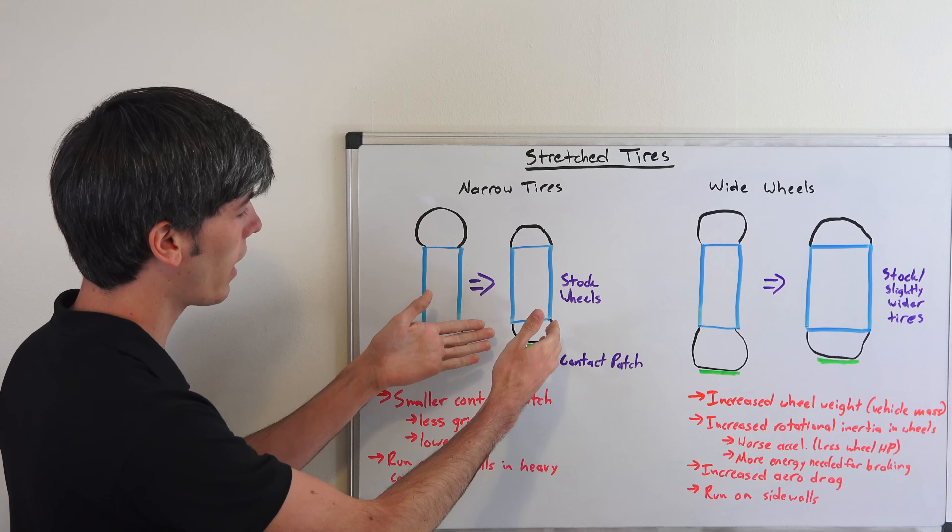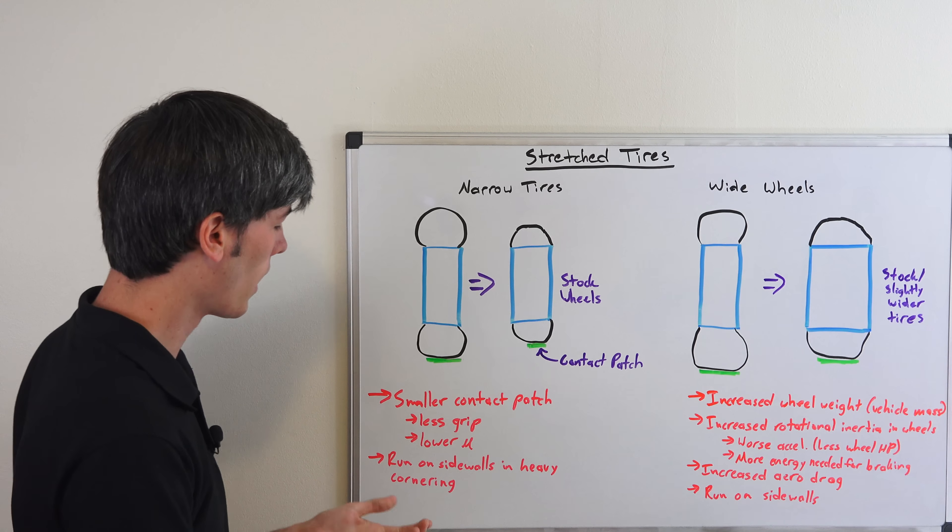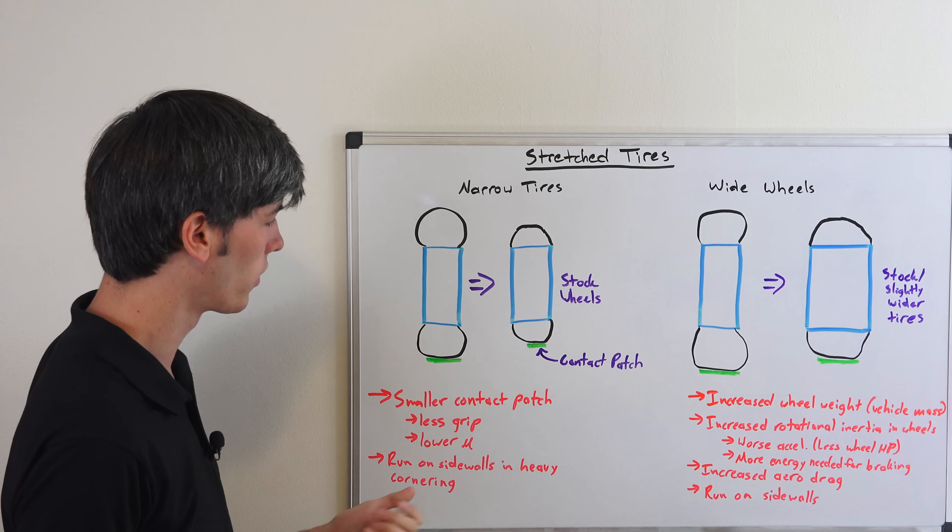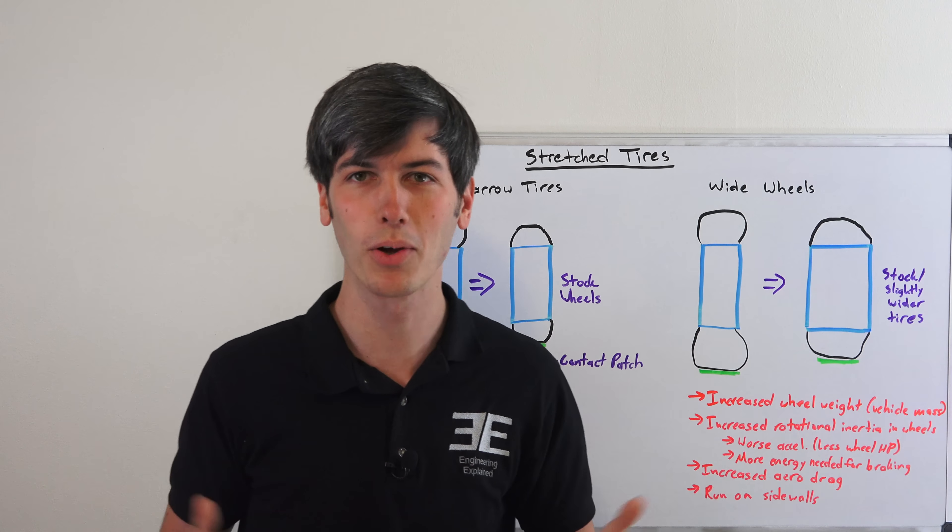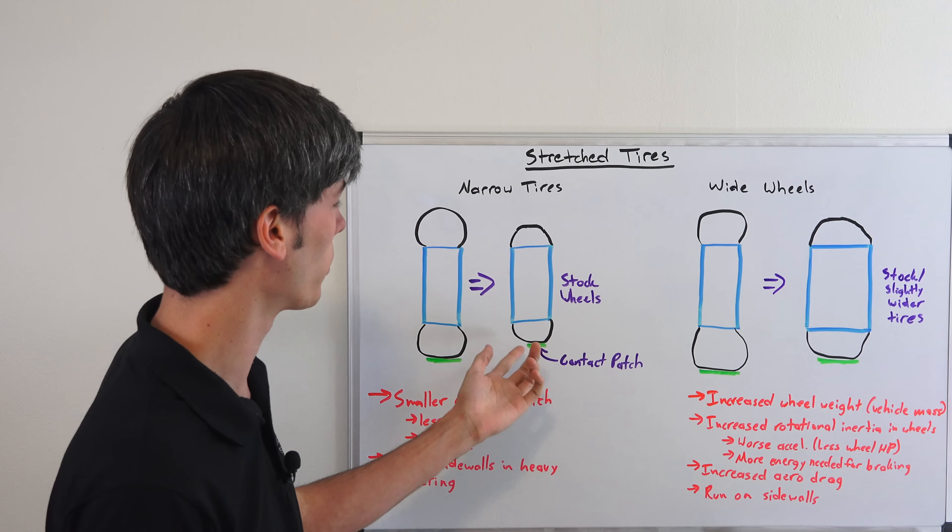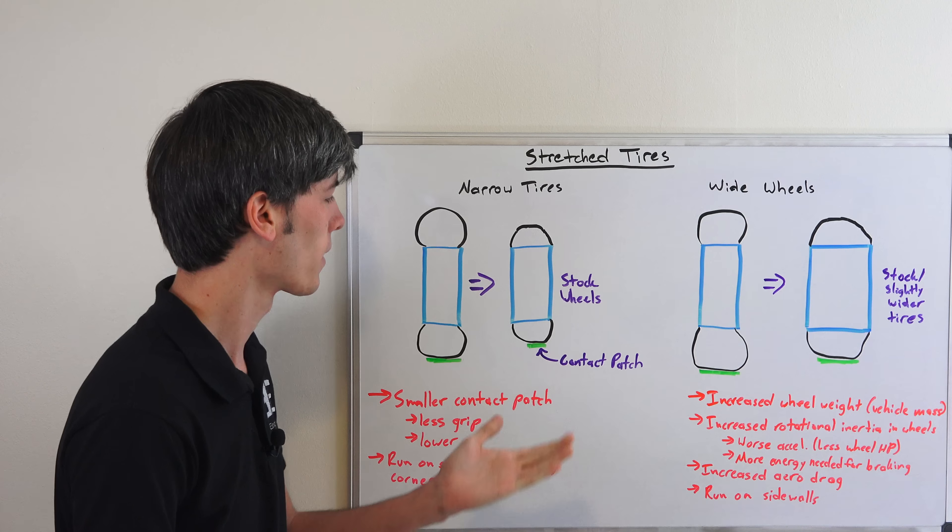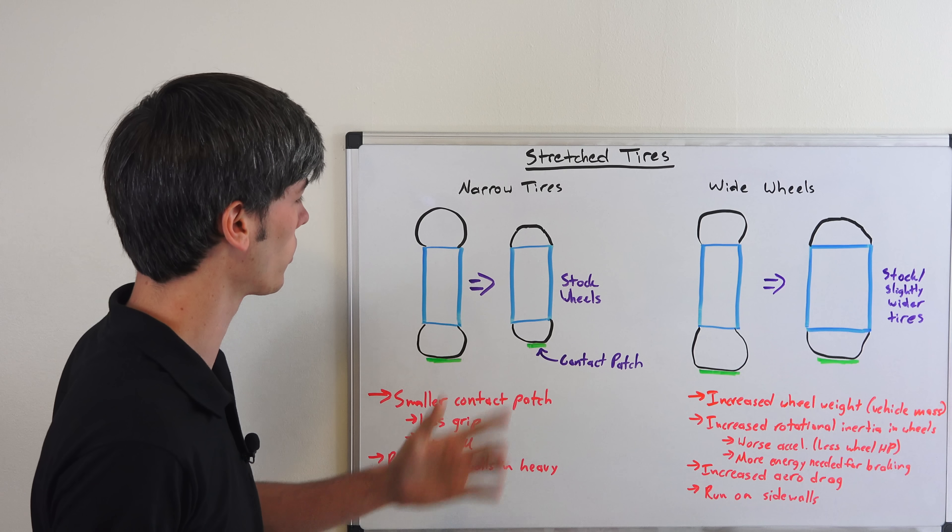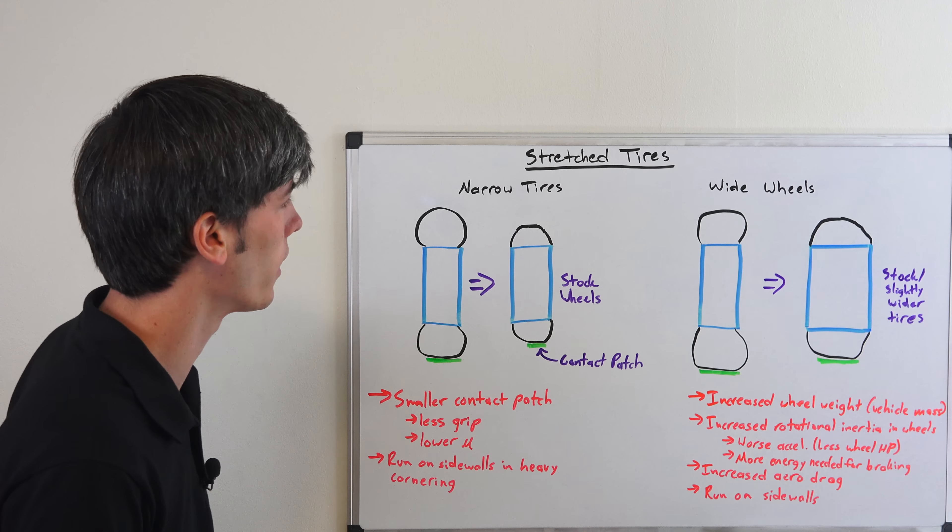Also under heavy cornering when you have a wheel like this, you're going to be running onto the sidewalls. And so obviously sidewalls aren't meant for you to run the car on them. That's what the tread is for, and so that's definitely not a benefit. And you're going to seriously lose grip once you get onto that sidewall and you could damage the tire.